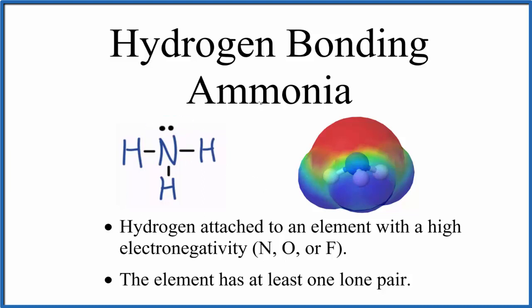When we talk about hydrogen bonding, first thing we need is hydrogen atoms attached to a really electronegative element, and those are going to be nitrogen, oxygen, or fluorine. So since we have a nitrogen there in the center attached to the hydrogens, they satisfy that criteria.